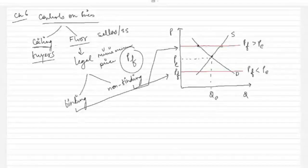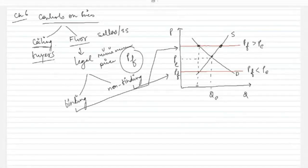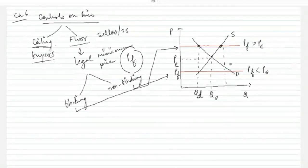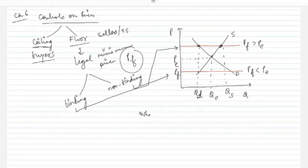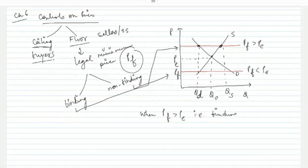At the price floor PF, this is the level of quantity demanded from the demand curve, and this is the level of quantity supplied from the supply curve. We notice that when price floor is greater than equilibrium price — when the policy is binding — quantity supplied is greater than quantity demanded.